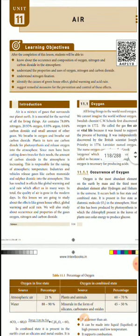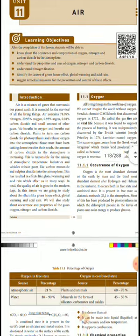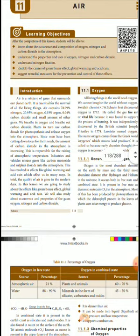Plants also need carbon dioxide for photosynthesis — they release oxygen. In the evening, plants take in oxygen and release carbon dioxide. So if we cut trees, we do not get the right amount of carbon dioxide in the atmosphere. Automatically, when we cut trees, the carbon dioxide level will be increased in the atmosphere.